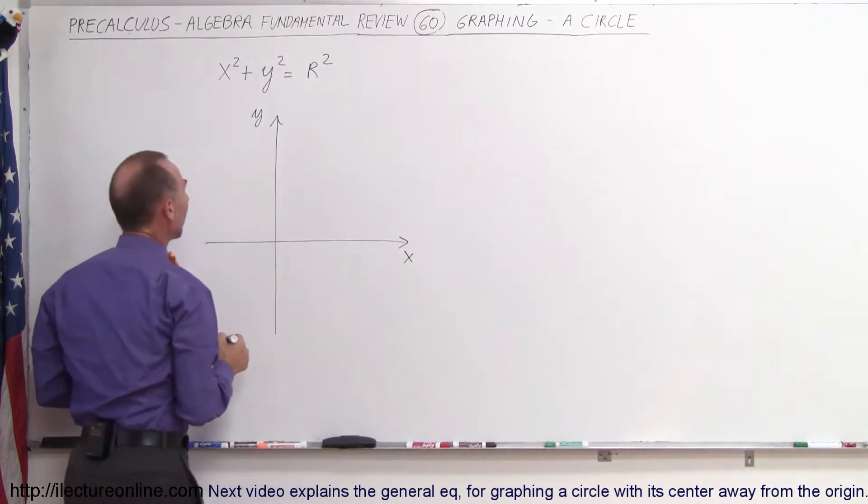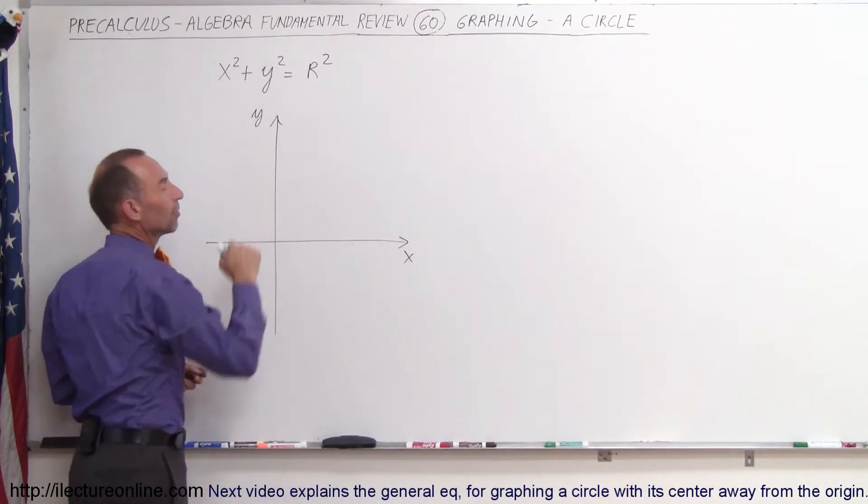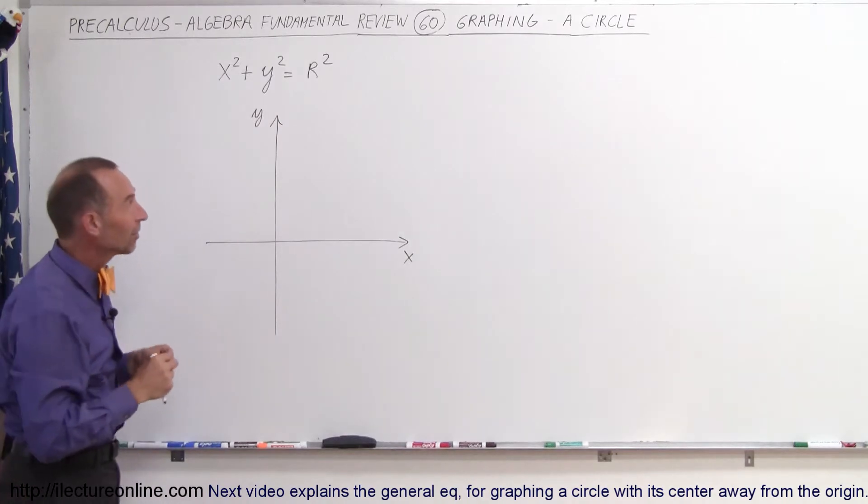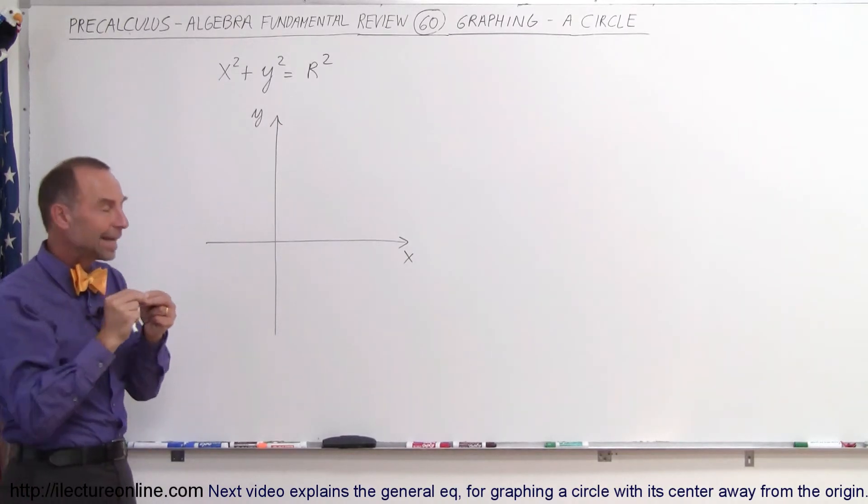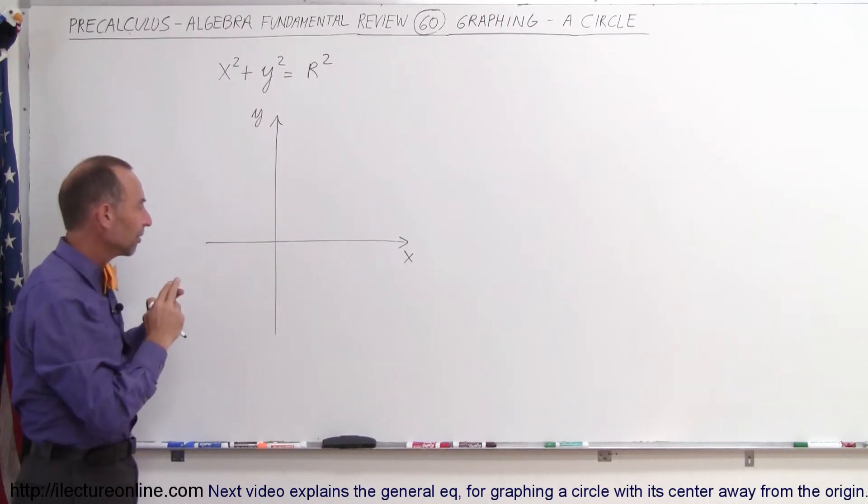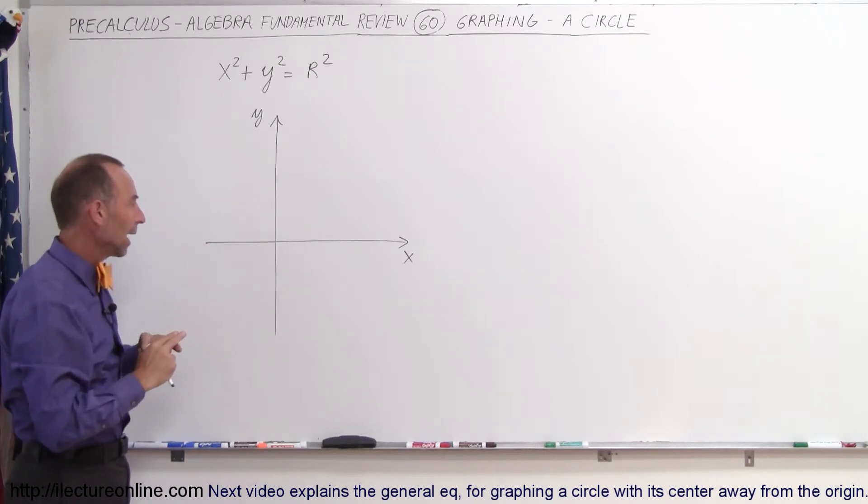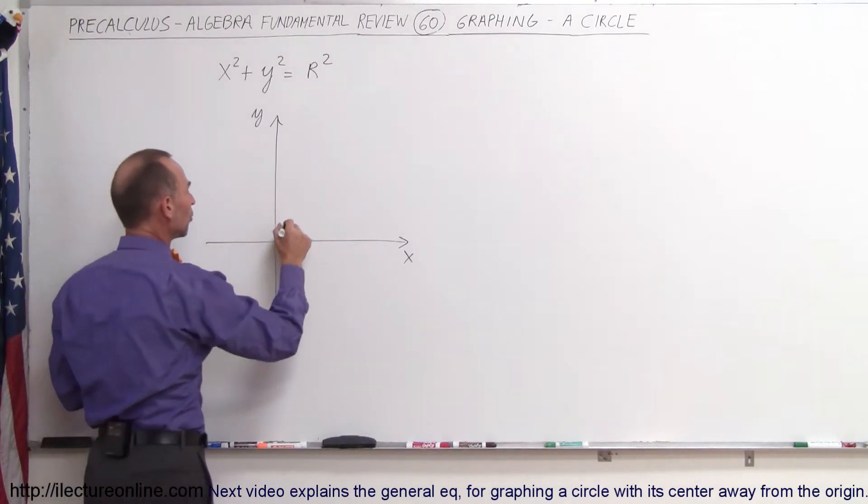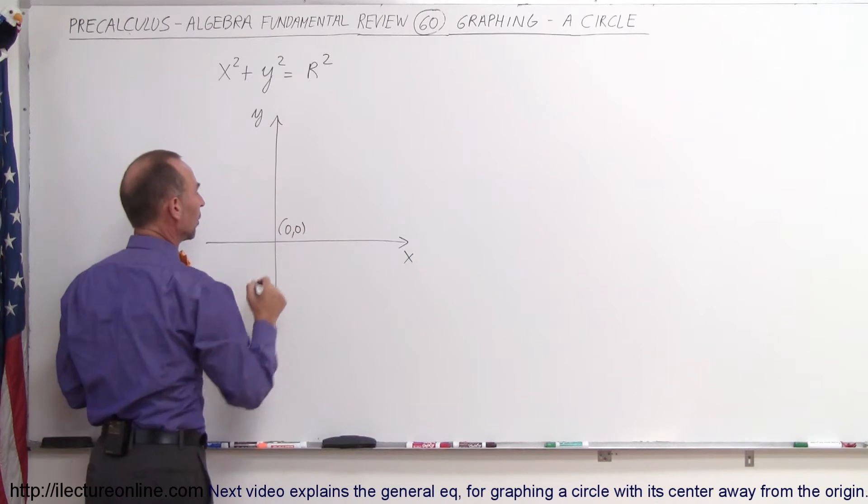there's our x-axis, and r represents the radius of the circle. And let's assume for this case that the center of the circle is on the coordinate point, the xy-coordinate point right here where the two axes cross, that would be the origin or the 0, 0 point.